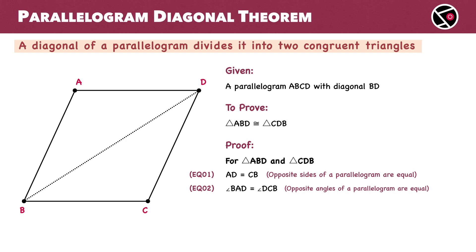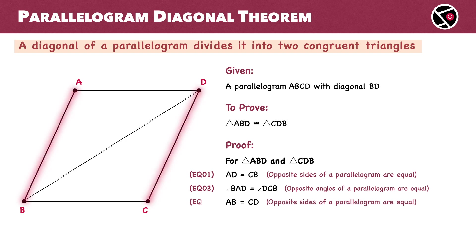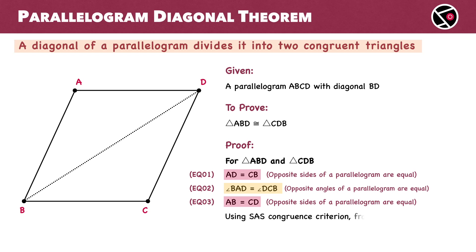Side AB is opposite to side CD. So, AB equals CD. This is equation 3. We have two pairs of equal corresponding sides and the included angles are also equal. So, by the SAS congruence criterion, triangle ABD is congruent to triangle CDB.